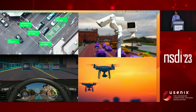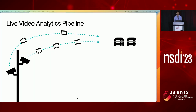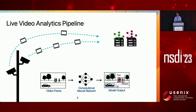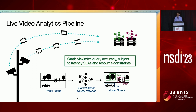In recent years, real-time video analytics has been crucial in enabling and guiding a wide range of applications, and at the heart of executing video analytics queries is their machine learning pipelines. Live camera feeds are streamed to a set of servers and GPUs, where machine learning models run on each frame in real-time, locating and characterizing objects with high accuracy. The goal with these pipelines is to maximize query accuracy subject to latency SLAs and resource constraints.